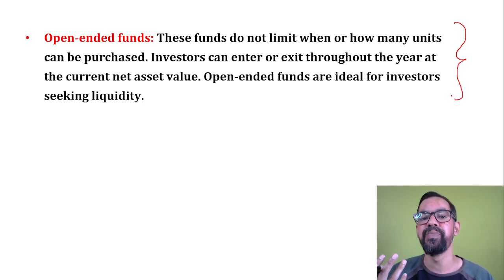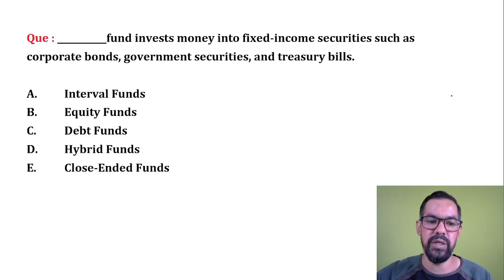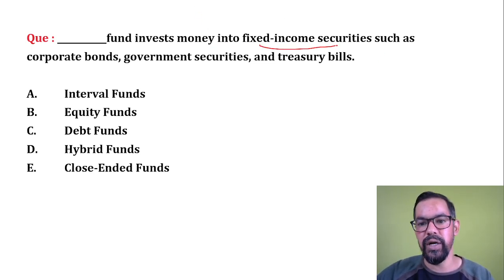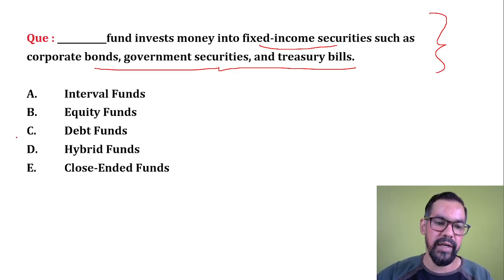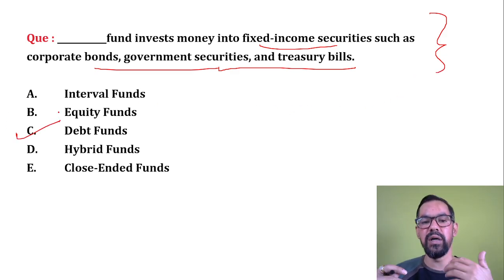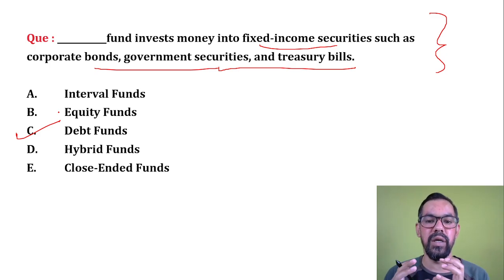Open-ended mutual funds are those funds where investors can enter or exit any time at the current NAV of that particular mutual fund. Next question: which fund invests money into fixed income securities such as corporate bonds, government securities, and treasury bills? The correct answer is debt funds.